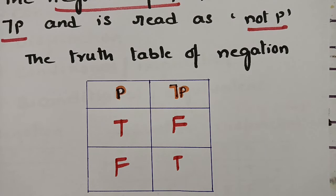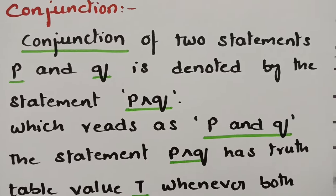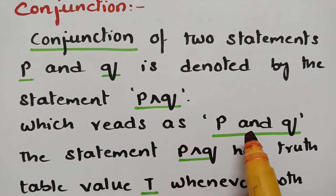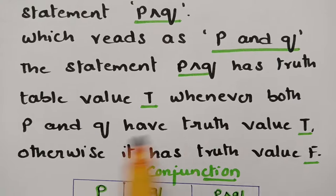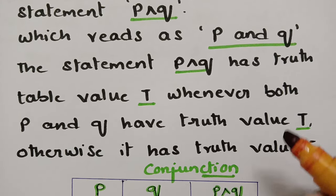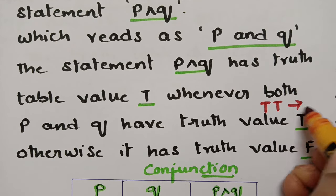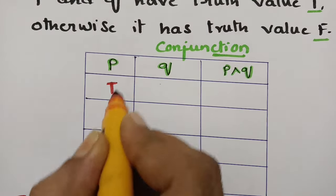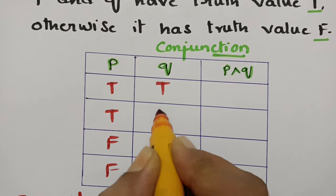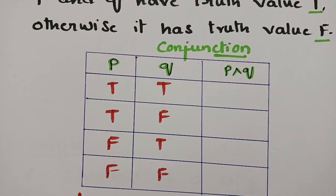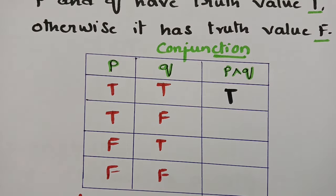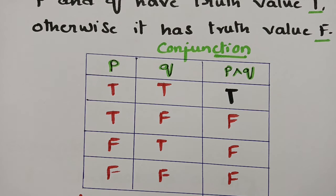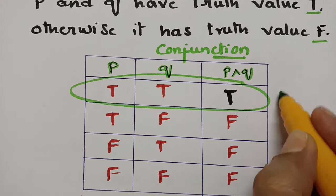Coming to conjunction: the conjunction of two statements P and Q is denoted by P ∧ Q, read as 'P and Q.' The statement P and Q has truth value true whenever both P and Q have truth value true. If P is true and Q is true, the result is also true; otherwise the statement is false. The truth table for P ∧ Q: T, T, F, F for P and T, F, T, F for Q. Wherever you find double T — two truths — it will be true and the rest are all false.